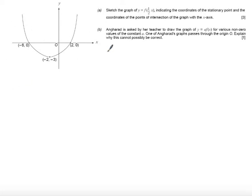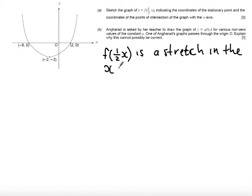The first thing to acknowledge is what this transformation is. f(½x) is a stretch in the x-direction, since it's inside the brackets. The scale factor is the inverse of this, so 1 divided by ½, which is actually a scale factor of 2. So f(½x) is a stretch in the x-direction of scale factor 2.